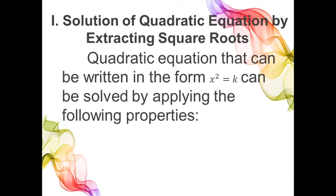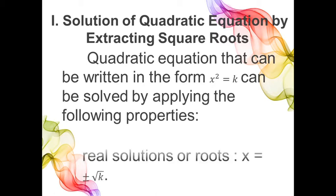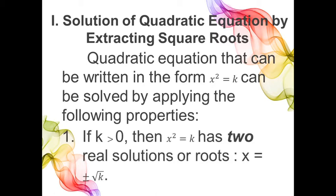A quadratic equation that can be written in the form x squared is equal to k can be solved by applying the following properties. First, if k is greater than 0, or if k is a positive number, then x squared equals k has two real solutions or roots. That is, x is equal to plus and minus the square root of k.